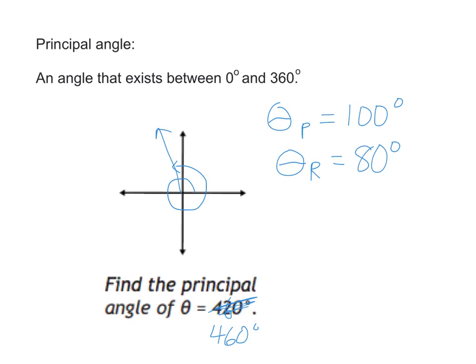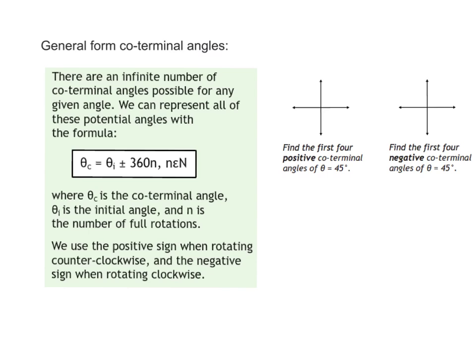And then there's just one more thing here that's not on your sheet that we'll talk more about later, but the general term for coterminal angles. Like I already said, there are an infinite number of coterminal angles possible for any given angle. We can represent all of these potential angles with this formula. Theta C, so for coterminal, is theta I, the initial angle, plus or minus 360 N.